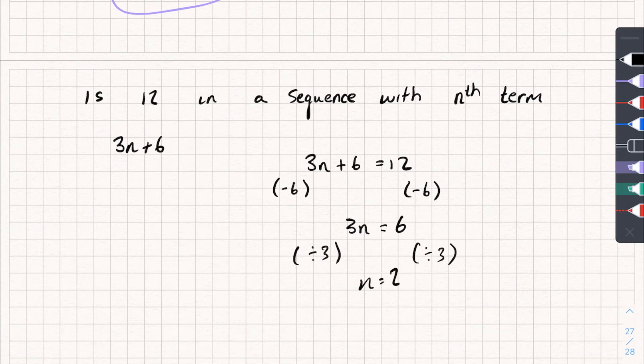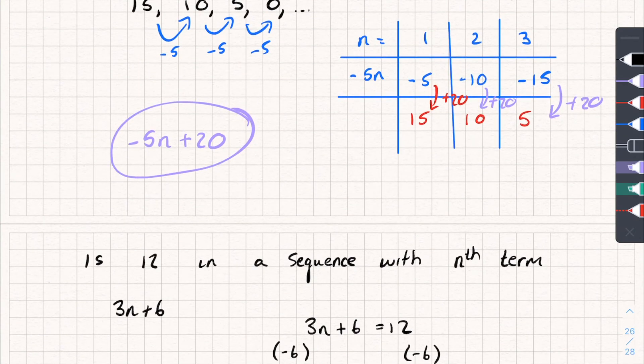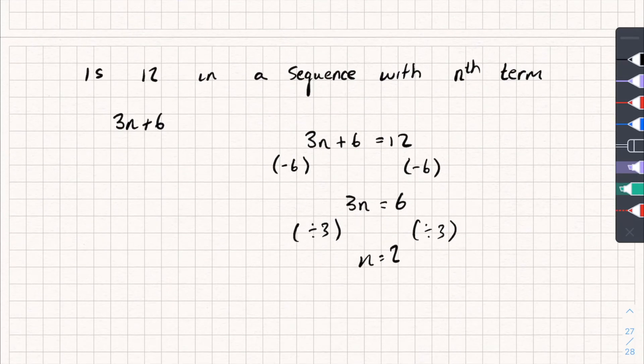Well, with sequences, we're only putting in integer or whole number values into our nth term. So if when we work out what n is from this equation here, if it's an integer or a whole number, then that means that that value is in our sequence.